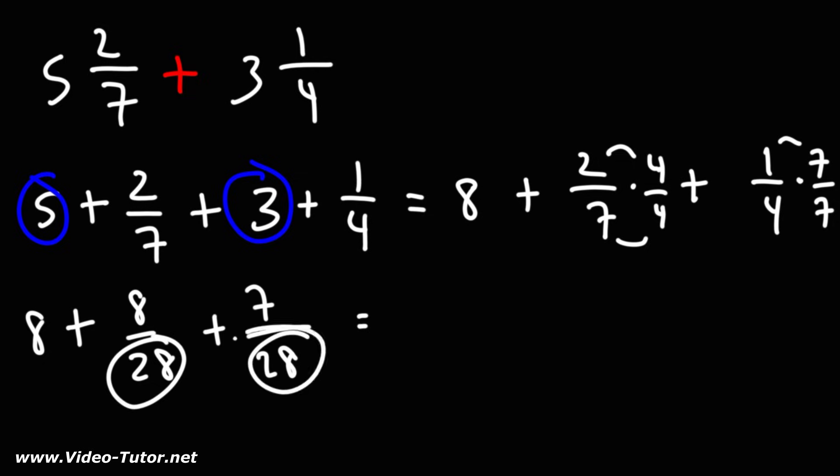So now that we have the same denominator, we can add the numerators of the two fractions. Eight plus seven is fifteen.